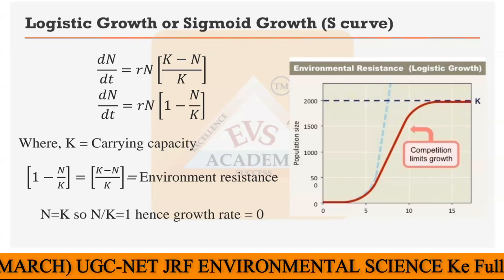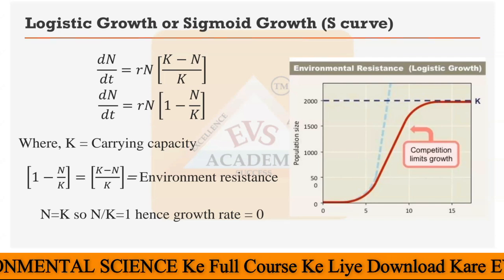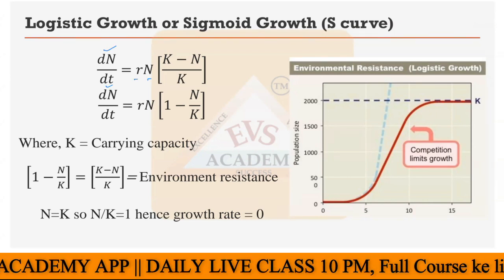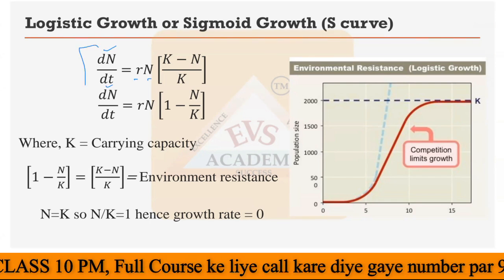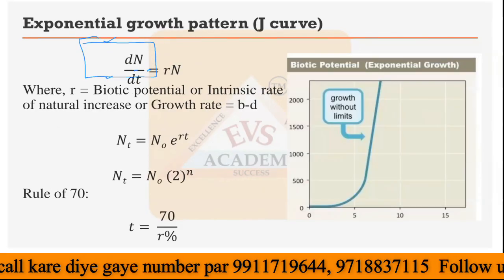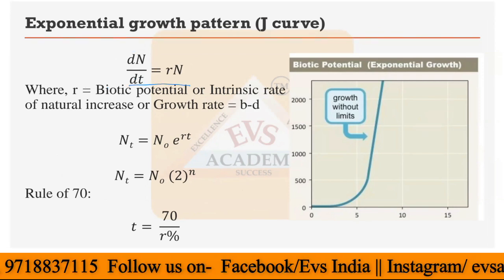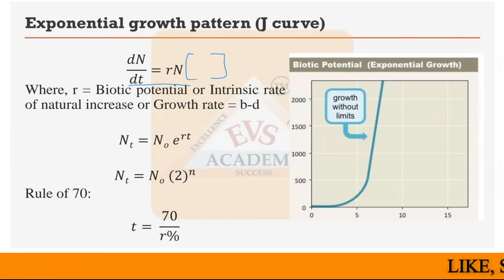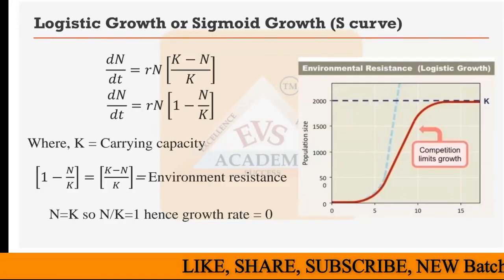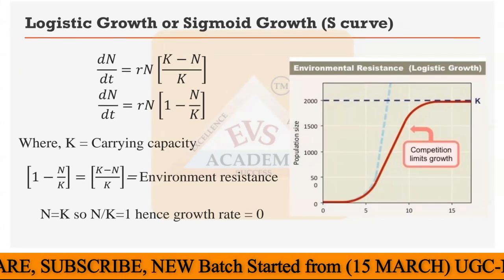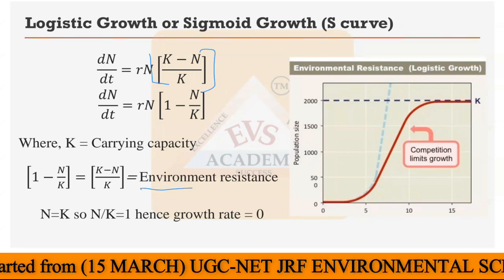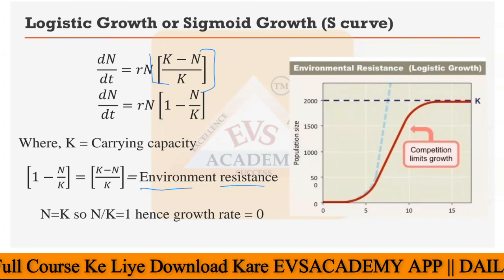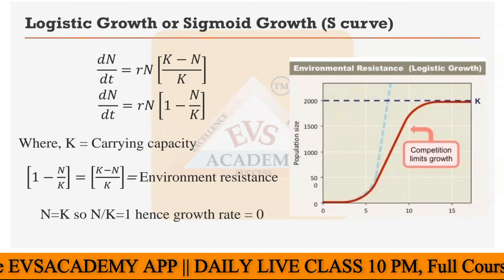The formula used in logistic or sigmoid growth is: dn/dt equals rN multiplied by (K minus N) divided by K. The term rN was already present in the J-curve formula. In the sigmoid formula, a new term is introduced on the right-hand side: (K minus N) divided by K. This new term is called environmental resistance — it represents the environment limiting the number of individuals, which cannot exceed the carrying capacity.